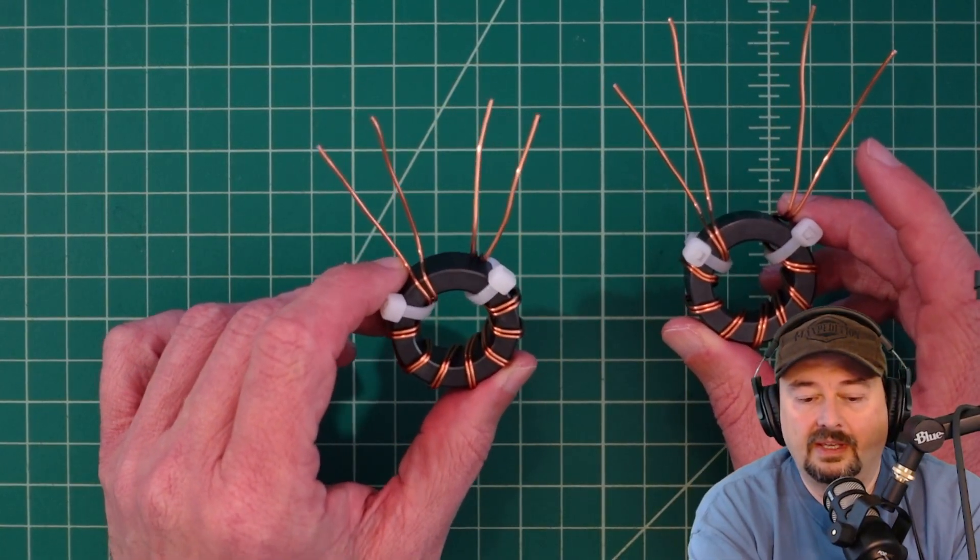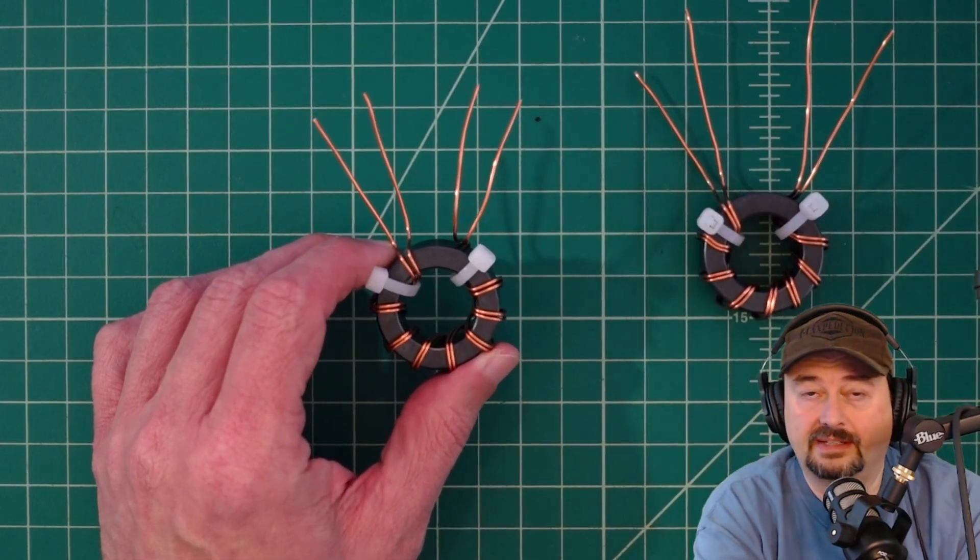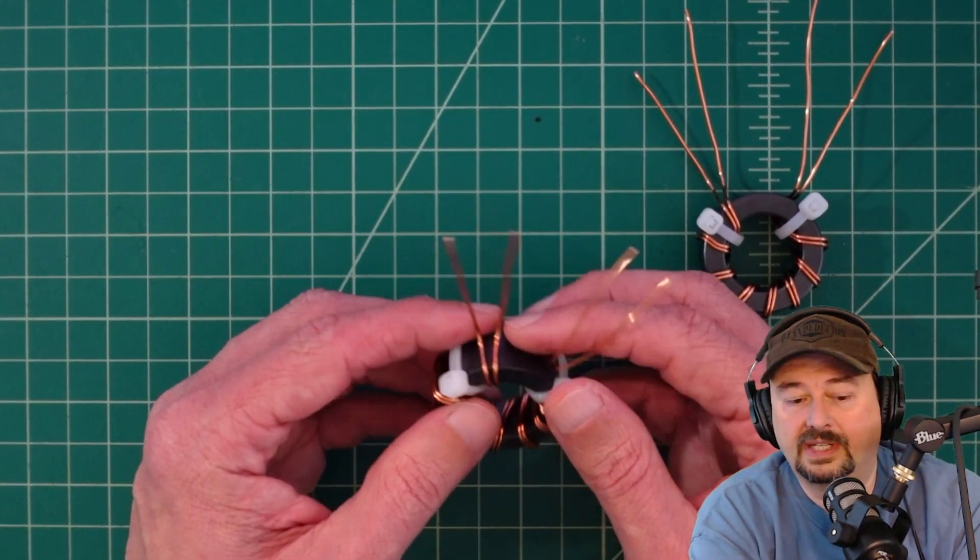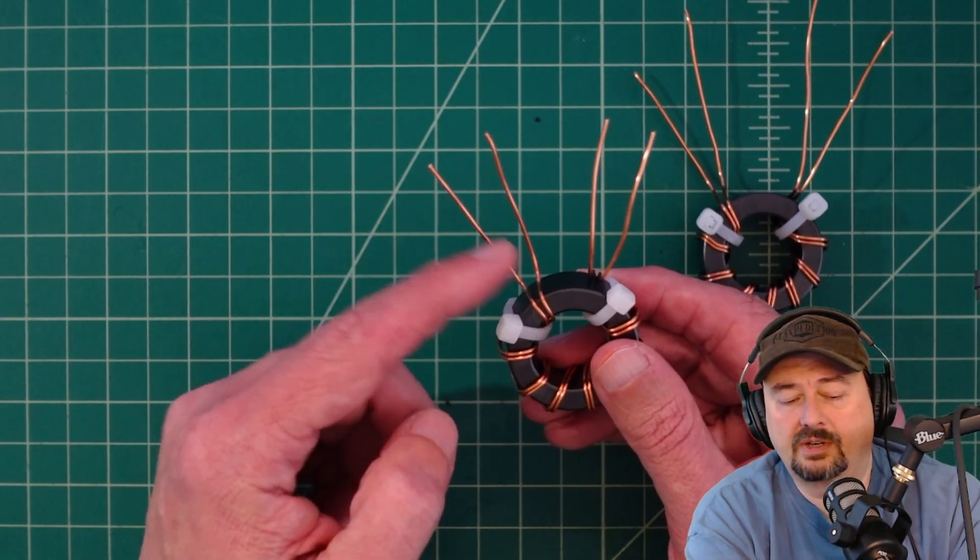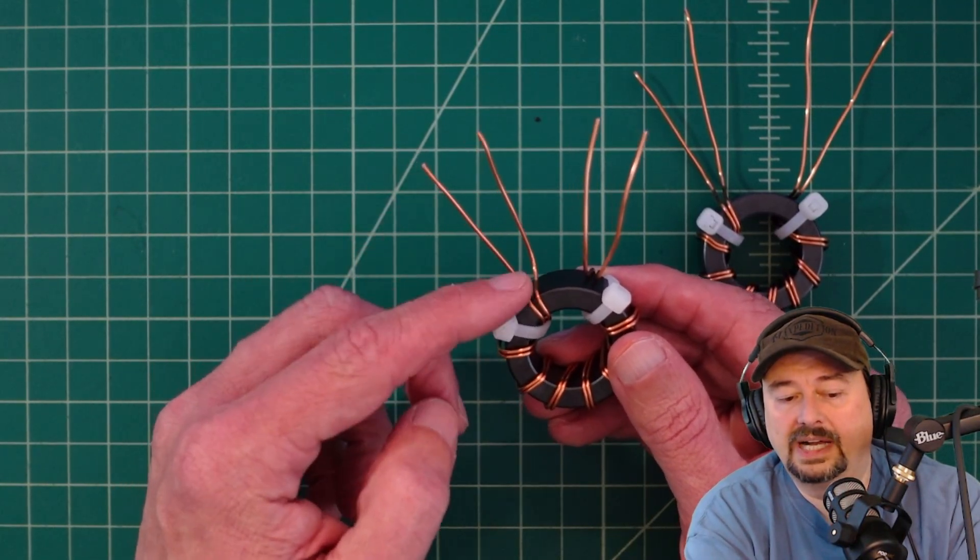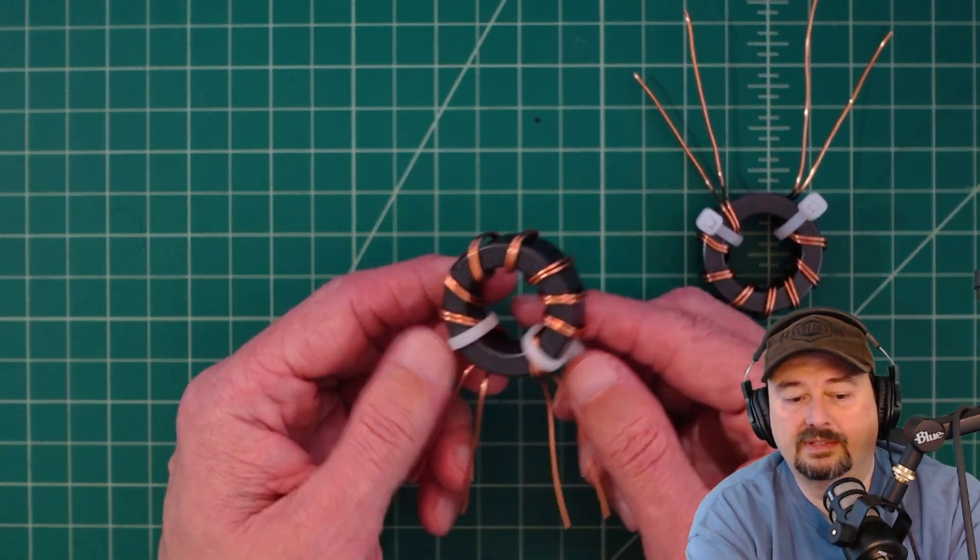Some designs say go all the way up to 18 winds. Some say you don't need to go that high, just do what works for you. What I did is I just took two wires, it's called a bifilar winding, and I used a zip tie to hold it down. Did eight wraps, you see front to back.